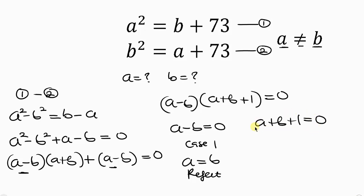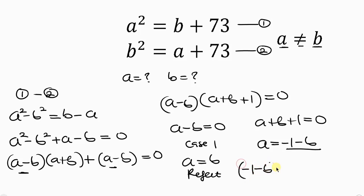Now let's focus on our second case. Moving b and 1 to the right-hand side, this becomes a equal to negative 1 minus b. Now I'm going to substitute this expression into equation 1. Here we have a squared, so substituting gives (negative 1 minus b) squared equal to b plus 73.